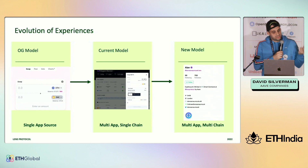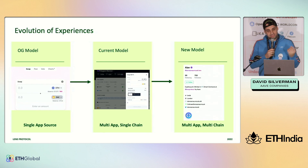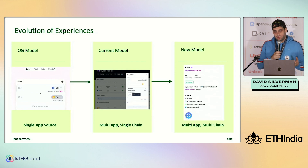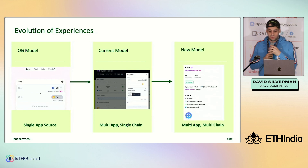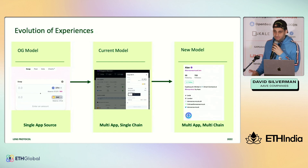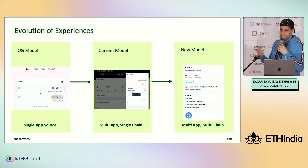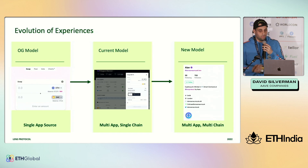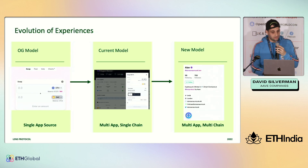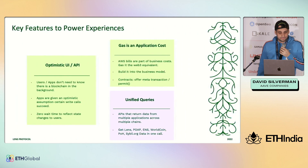Here is a screenshot from one of the Lens applications — Lensster. It is stitching together data from multiple applications across multiple chains: ENS on Mainnet, Lens on Polygon, WorldCoin on Polygon, PoOp on Gnosis Chain, and many more — just in one frame that's not even the entire screen. We really think that this is the future of Web3 applications.